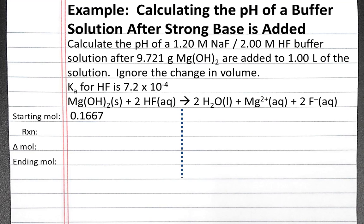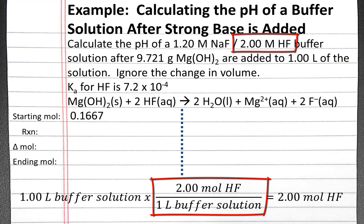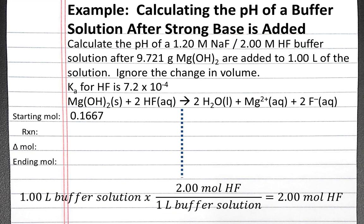To calculate how many moles of hydrofluoric acid we have, we can also use dimensional analysis. We have 1 liter of buffer solution, and for each liter of buffer solution we have 2 moles of hydrofluoric acid, as indicated by the 2 molar HF. So we have a total of 2 moles of hydrofluoric acid.